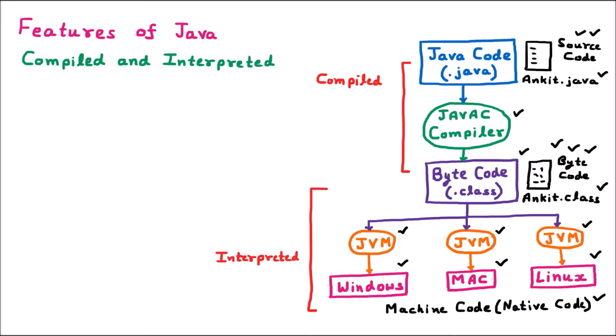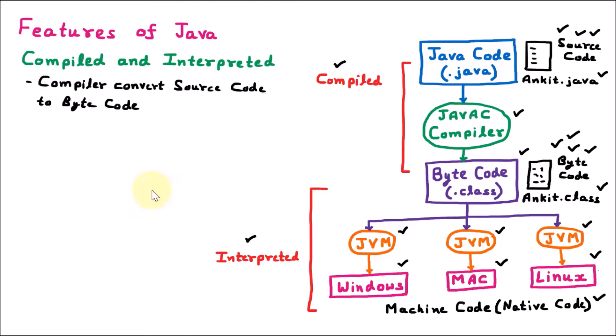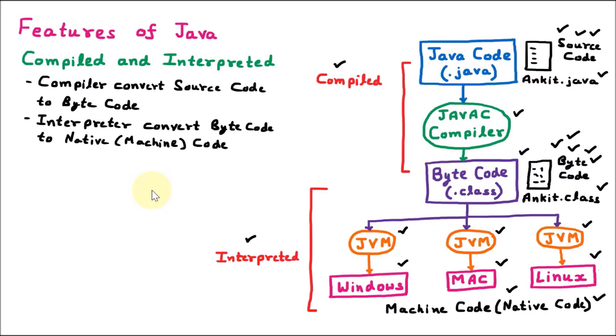So in Java, we have the compiled phase and the interpreted phase. That's why Java is called a compiled and interpreted language. First, the compiler converts source code to byte code. In the second step, the interpreter converts byte code to native or machine code.